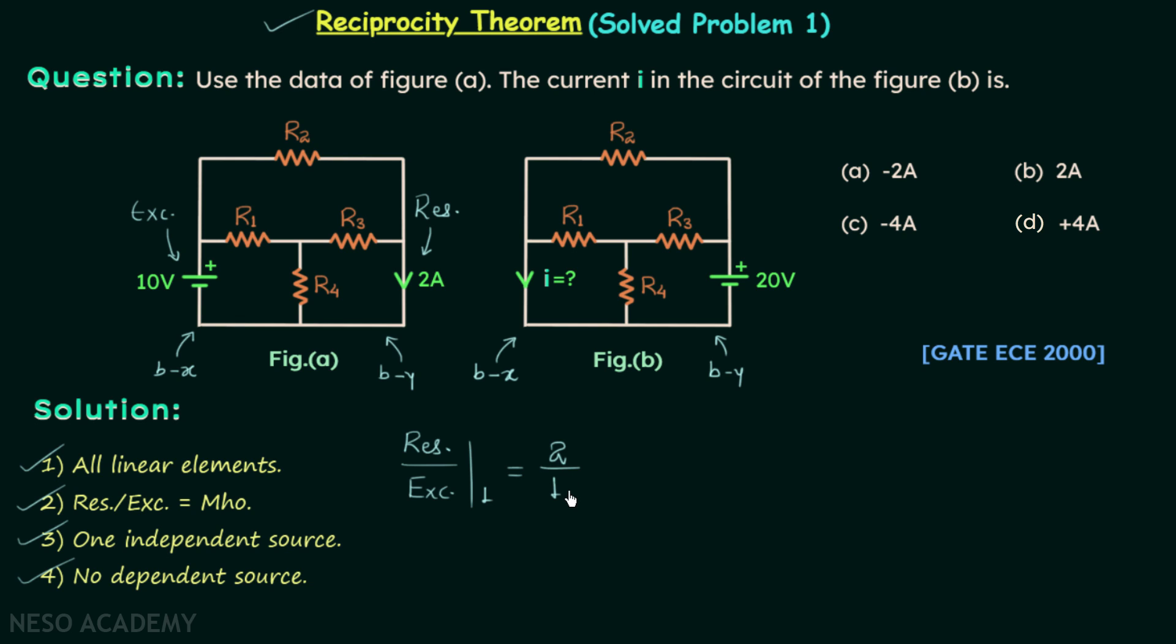2 amperes over 10 volts. Now we will focus on network B. We will find out ratio of response to excitation. In this case it is equal to i over 20.